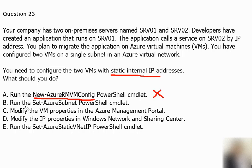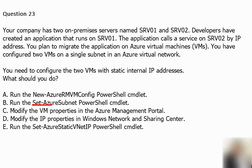Option B is to run the Set-AzureSubnet PowerShell command. This command is used to set the subnet list for a virtual machine configuration. That is also not the correct option for assigning a static internal IP address.